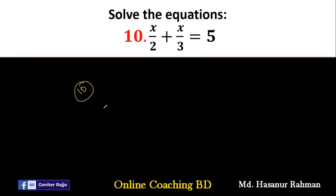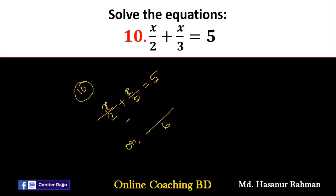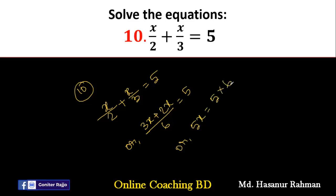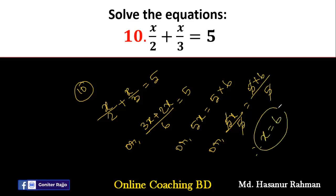Number 10 says x divided by 2 plus x divided by 3 equal to 5. The LCM of 2 and 3 is 6. So 6 divided by 2 is 3, giving 3x; plus 6 divided by 3 is 2, giving 2x. Now 3x plus 2x is 5x equal to 5 multiplied by 6, which is 30. Dividing both parts by 5 gives x equal to 6.